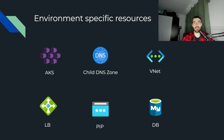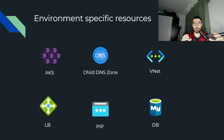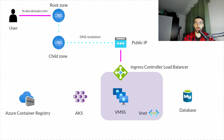Moving further down the line, we have the environment-specific resources. These are basically what comprises the dev environment, the QA environment, the prod environment, or any of the environments we talked about. In this case, we're going to have an AKS — Azure Kubernetes Service — a child DNS zone. As mentioned previously, the root DNS zone would be something like mydomain.com, and the child DNS zone would sit on that root domain, so it would be something like dev.mydomain.com. Then we would have a VNet with a private address space to host our Kubernetes nodes, the load balancer for the ingress controller, the public IP address which advertises our application to the internet, and the database.